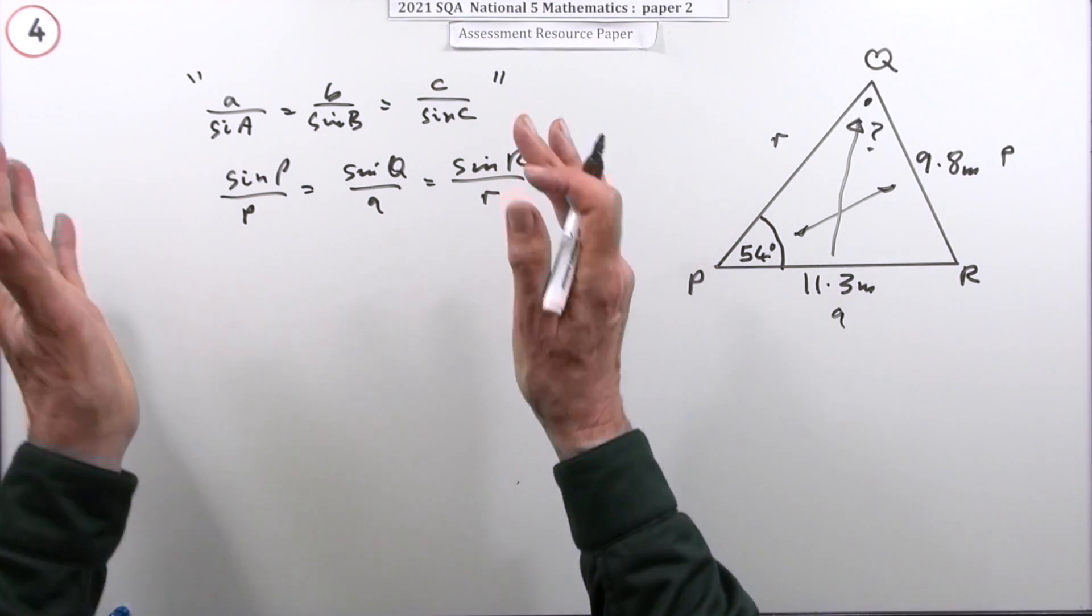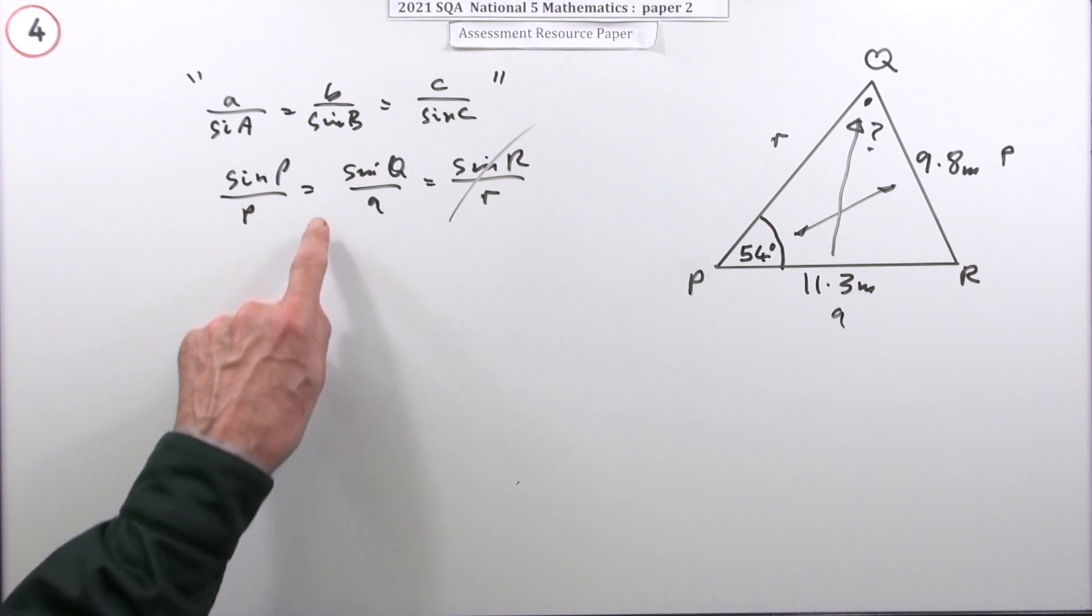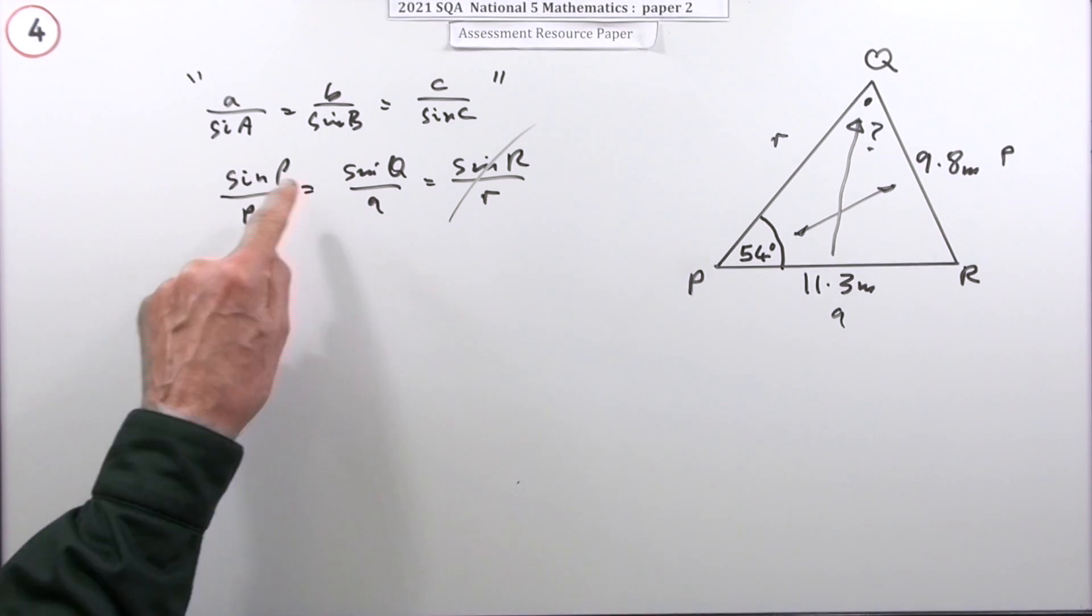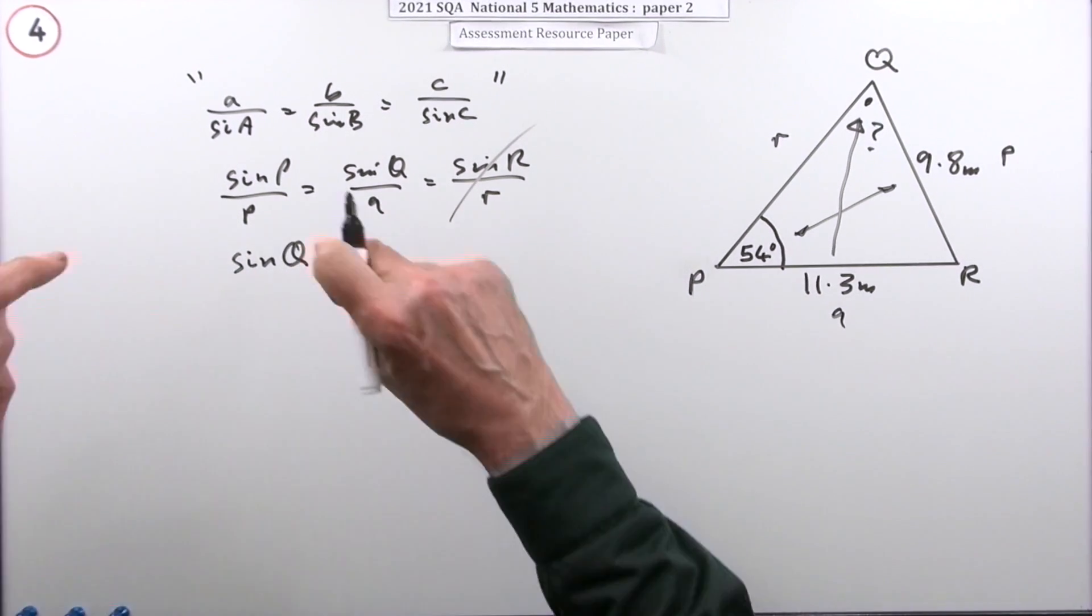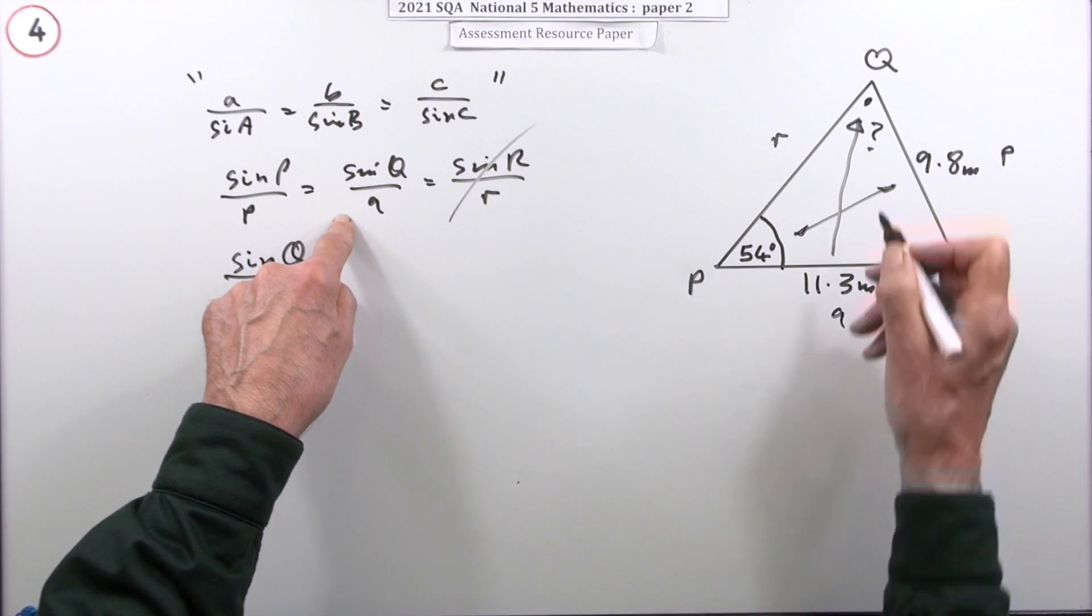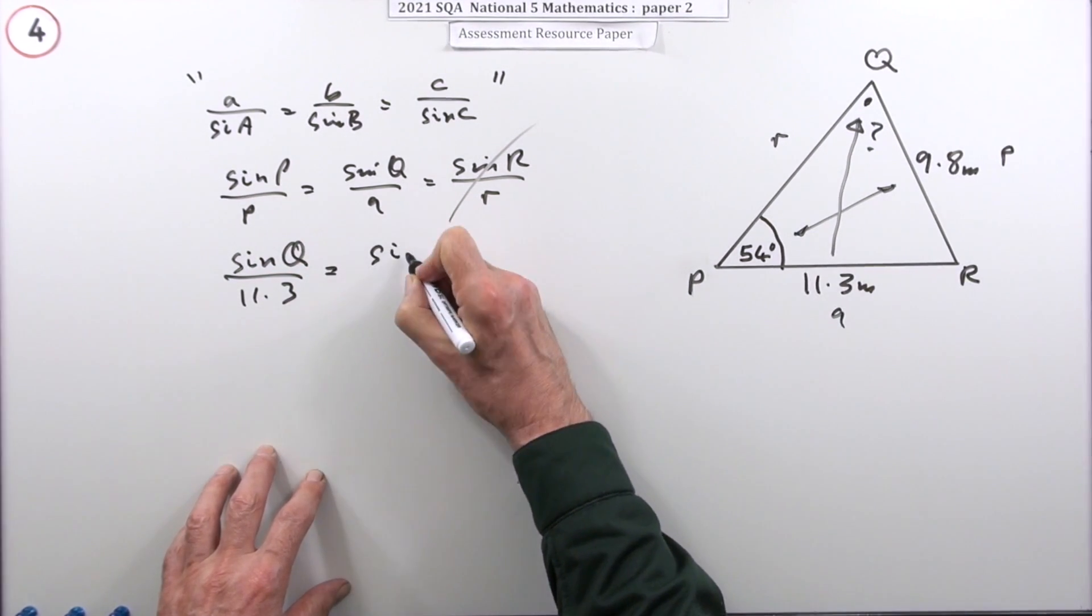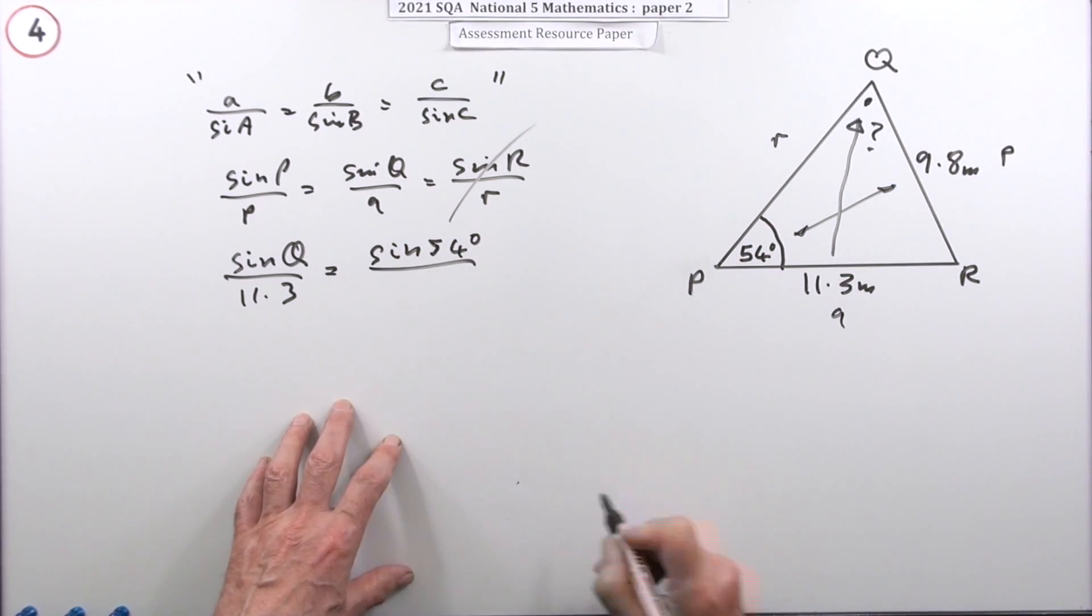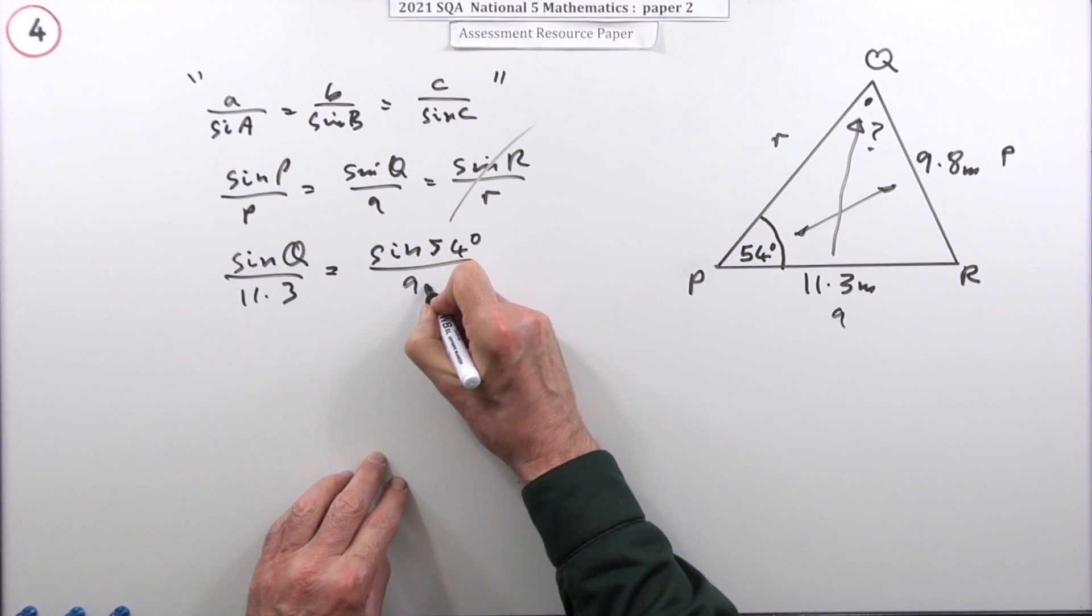You're not going to get any marks for that. You're not going to get any marks when you put the figures in. R's not involved, so I'll knock that one out. So this is what I'm going to be using. Put the thing that you want at the front. So I'll start off with sine Q. But you could have come straight in here. Sine Q over its corresponding side, 11.3, is equal to sine P, which is 54, divided by its corresponding side, 9.8.